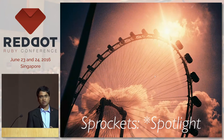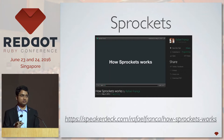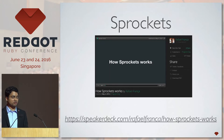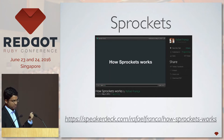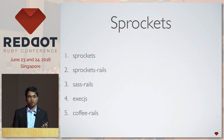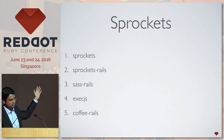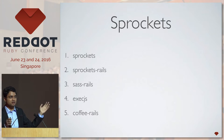The first thing I want to touch upon is Sprockets. Sprockets is that part of Rails used for actually serving your resources — your JS and CSS resources. There's a wonderful talk on how Sprockets actually works by Rafael at this year's RailsConf, so you should check that out. I want to focus on the new additions in Sprockets. Sprockets consists of the sprockets gem, sprockets-rails, sass-rails, execjs, and coffee-rails — peripheral gems that together comprise the asset pipeline.